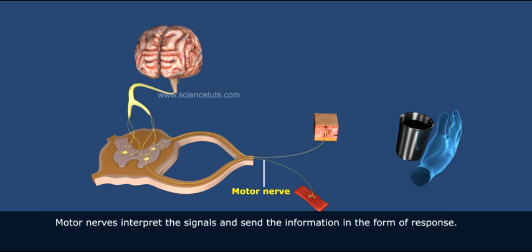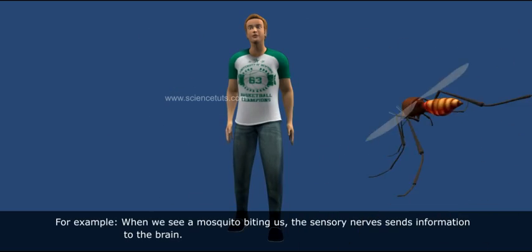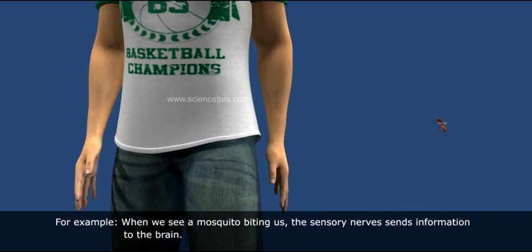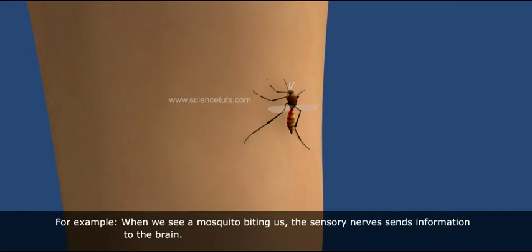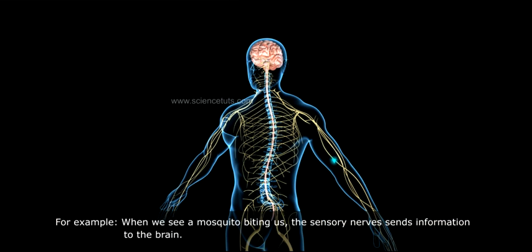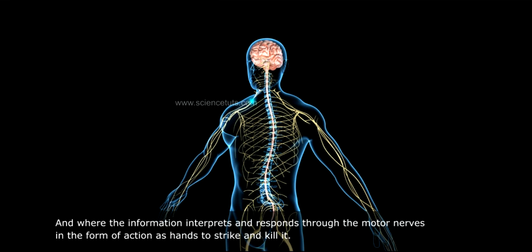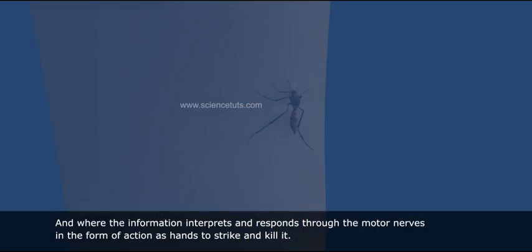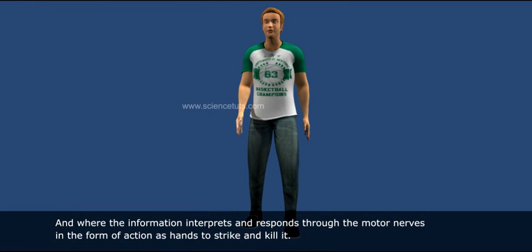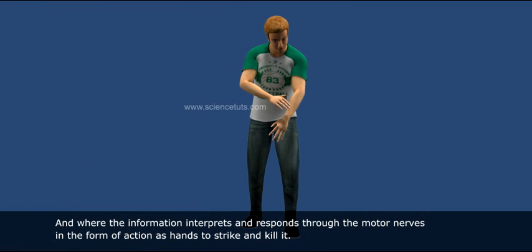Motor nerves interpret the signals and send the information in the form of a response. For example, when we see a mosquito biting us, the sensory nerve sends information to the brain, where the information is interpreted and responds through the motor nerves in the form of action as hands to strike and kill it.